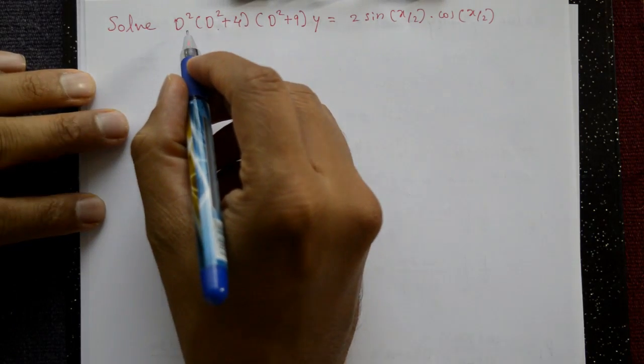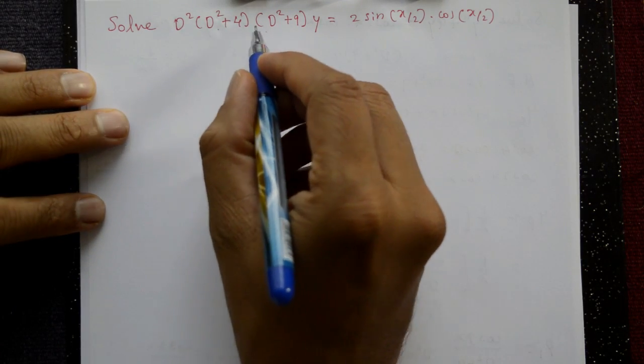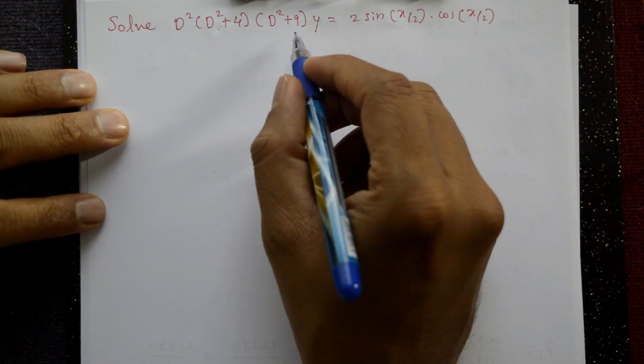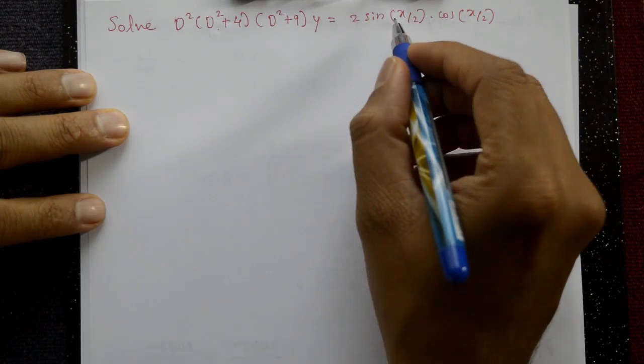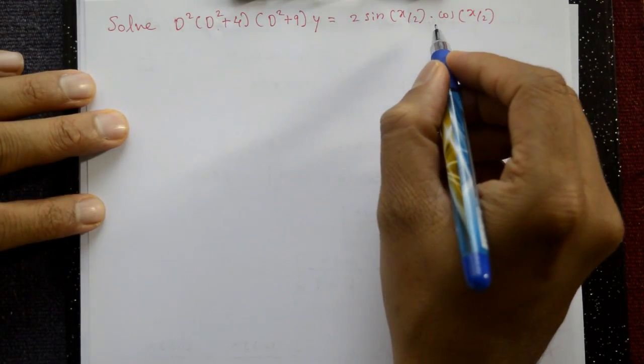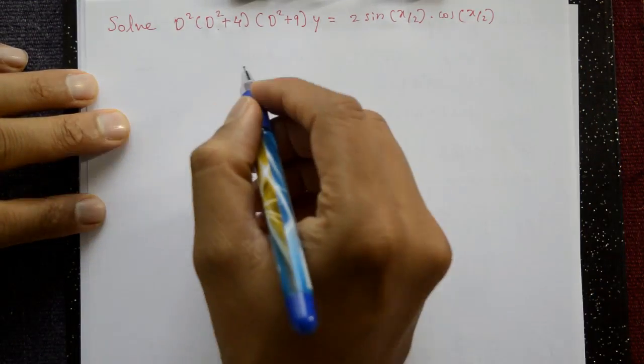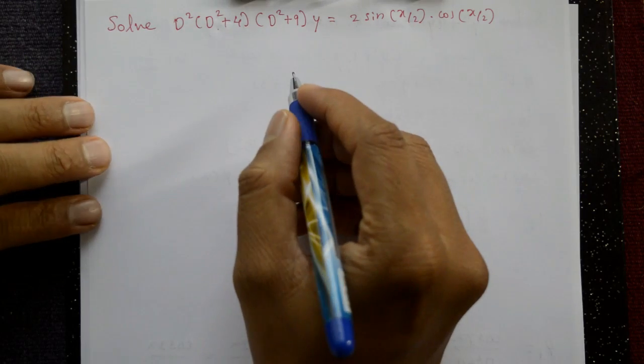Solve D-squared into D-squared plus 4 into D-squared plus 9 into y equal to 2 sin(x/2) into cos(x/2). Find the complete solution.